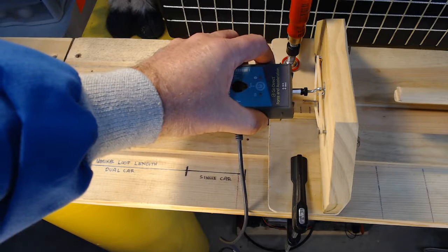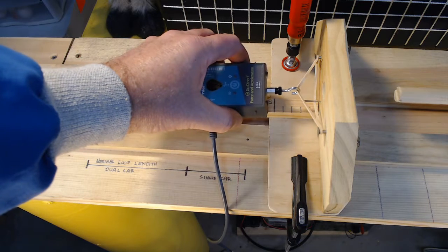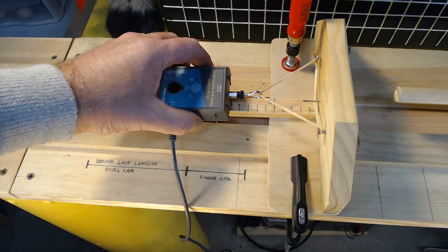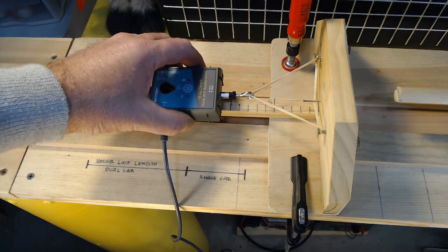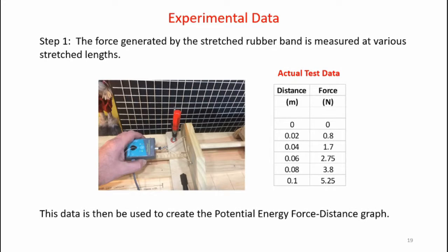Let's make some force measurements on the rubber band spring system. With no stretch in the spring, we have zero force. At two centimeters, four centimeters, six centimeters, eight centimeters, and ten centimeters, I collected the force data. Here's the data I collected on the stretched rubber band. When there was zero stretch distance, there was zero Newtons of force. However, when I stretched the band all the way to 0.1 meters, or 10 centimeters, the rubber band produced 5.25 Newtons of force.